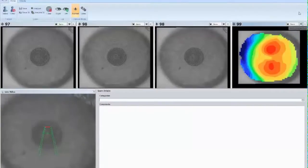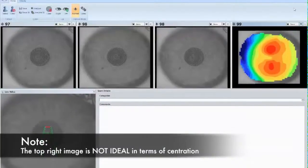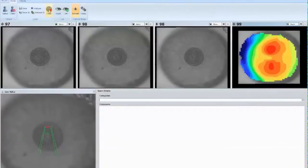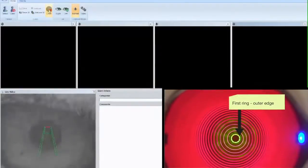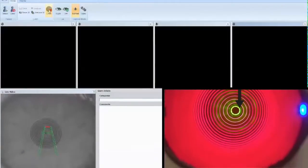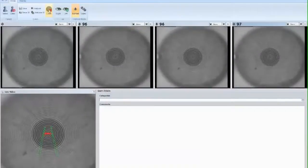For this individual, the mires of the Placido rings are not centralized within the limbus. If we ask the patient to look at the outer edge of the first ring towards the nose, we see the mires are a bit better, but not aligned within the limbus.